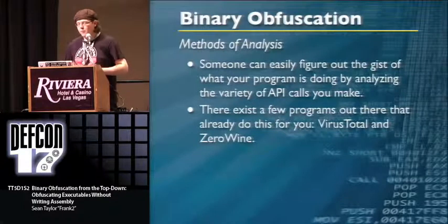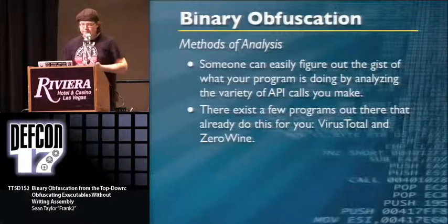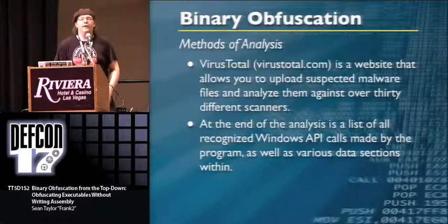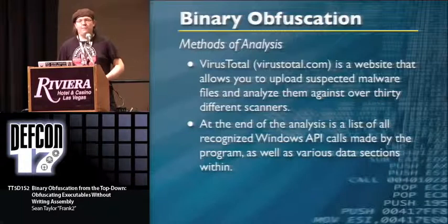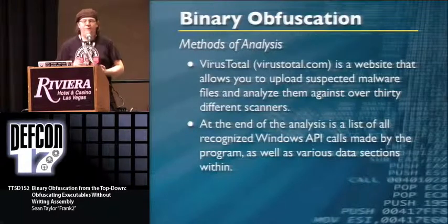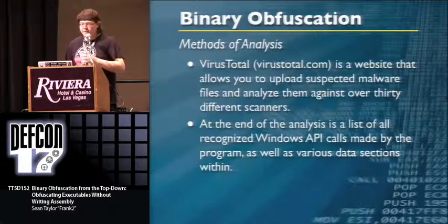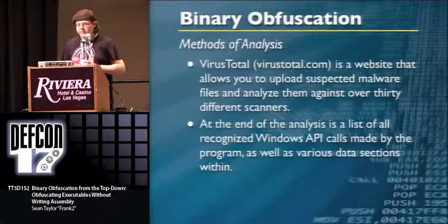Two programs I want to focus on are VirusTotal and ZeroWine. VirusTotal is an online app where you upload a suspect binary and it gets sent to 40 different virus scanners — Panda, AVG, McAfee, the five different versions of Norton, etc. At the end of analysis, along with a report card of who picked it up, you get a list of recognized Windows API calls, data sections, and program size.